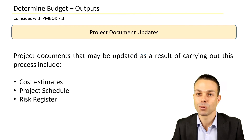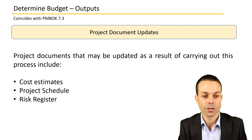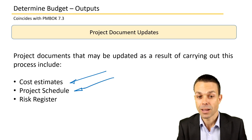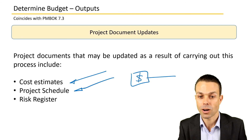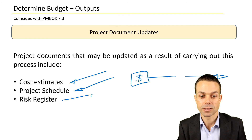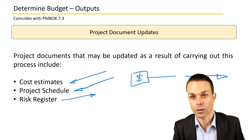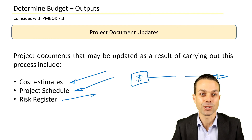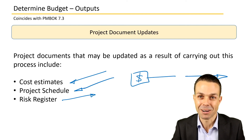Project document updates are also outputs. Cost estimates will need to be updated. The project schedule may need to be updated — for example, if resources can't be obtained at a certain point in time, the schedule may need to be extended. Any risks associated with cost also need to be updated. And those are all the details for determining the budget within the Project Management Body of Knowledge.